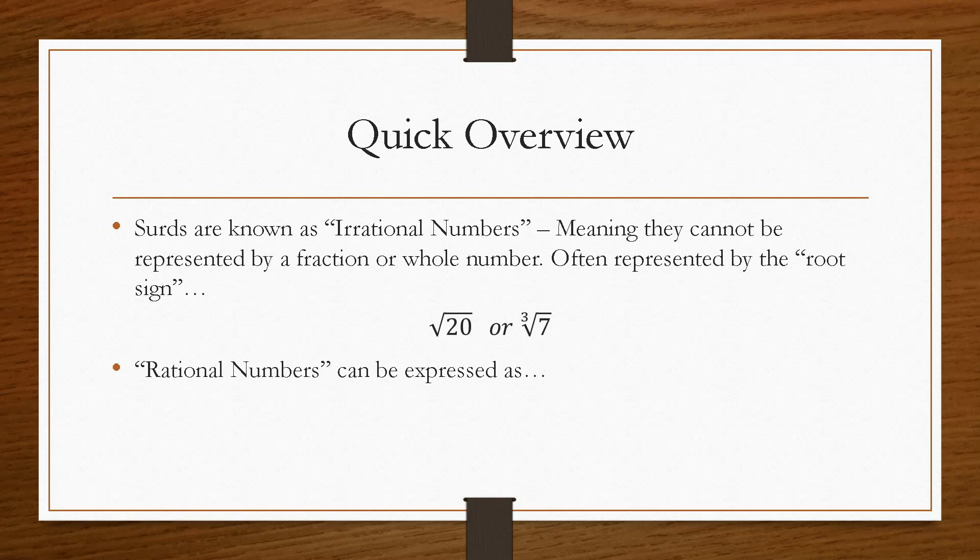Rational numbers, on the other hand, can be expressed as 2 or fractions like a quarter, 2 over 5, etc.